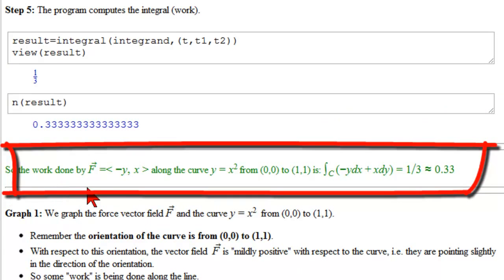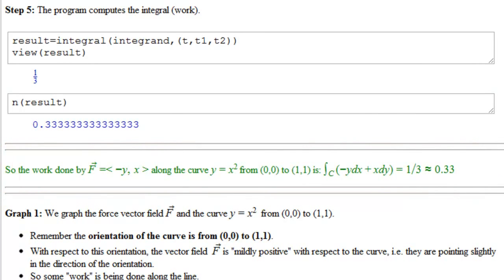So the work done by the force field f minus y, x along the curve y equal to x squared from (0,0) to (1,1) is 1 third, approximately equal to 0.33. Let's see what this looks like.